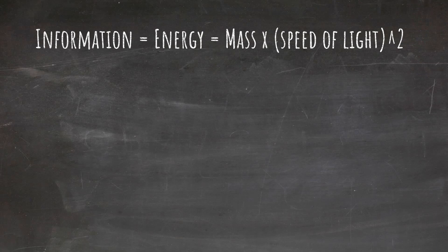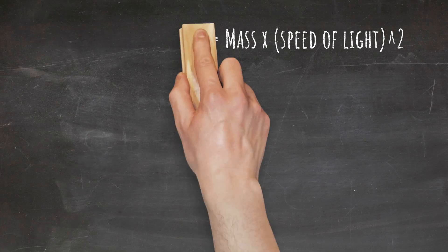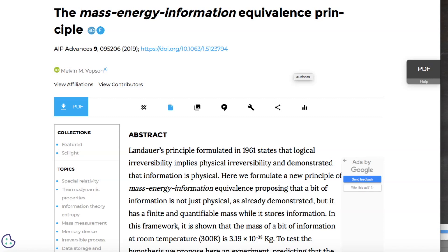A Harvard physicist published a paper in 2019 where he created a mathematical model in which information has a small amount of predictable mass and theorizes an experiment to test the theory, where he calculates the difference in mass that should be observed between a storage device of one terabyte and one with no data. Unfortunately, we don't yet have sensitive enough measuring devices to test the theory.